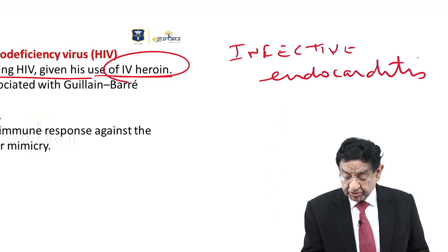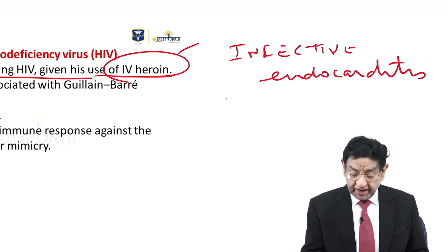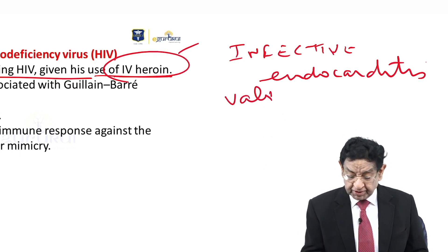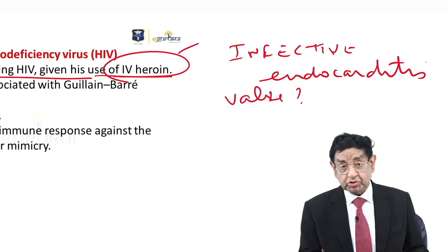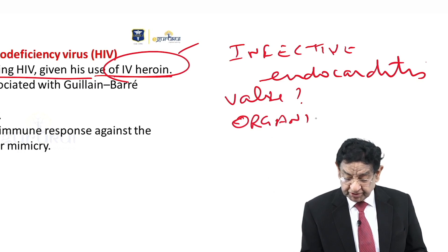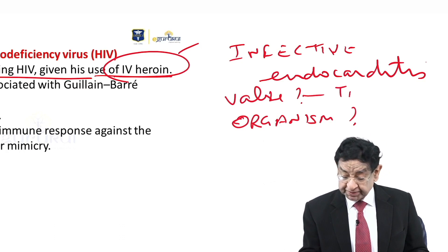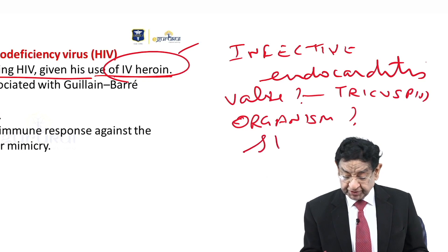I have two more questions. In this patient of IV drug abuse, which valve is most commonly involved, and which is the most common organism causing endocarditis? Write down the answer. The answer for the valve is tricuspid, and the answer for the organism is Staphylococcus aureus.